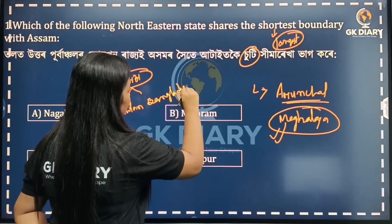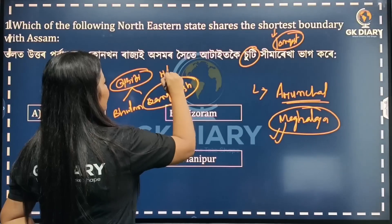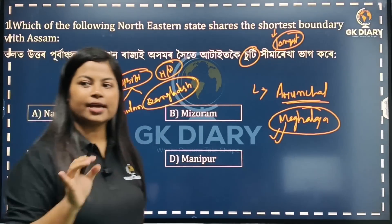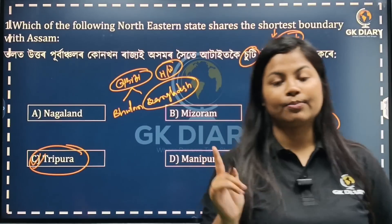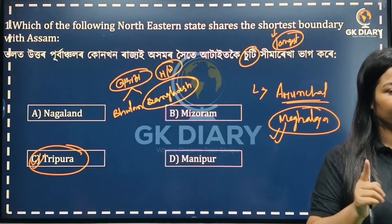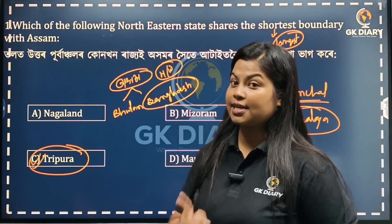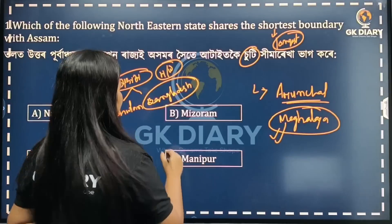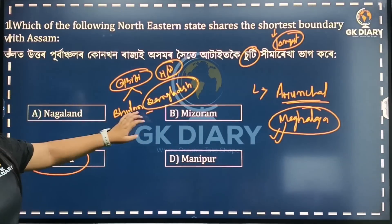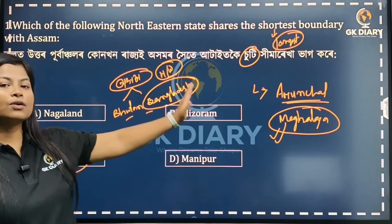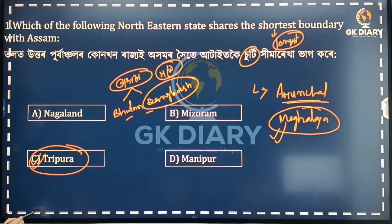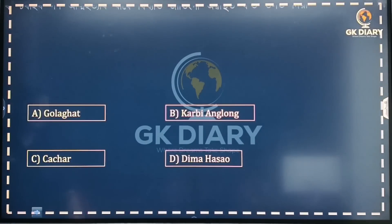So from this question, pay attention carefully and remember well. Also, regarding the longest international boundary, Assam shares the longest international boundary with Bangladesh. Next question.